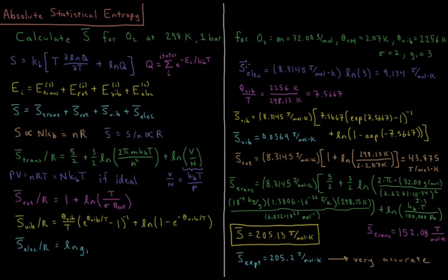Starting off with the easiest, the molar electronic entropy is R, 8.3145 joules per mole Kelvin, times the natural log of 3, which gives us 9.134 joules per mole Kelvin.